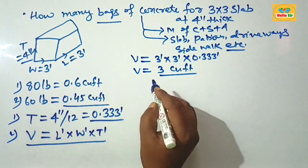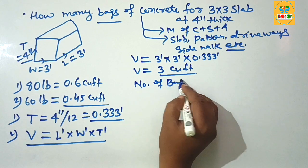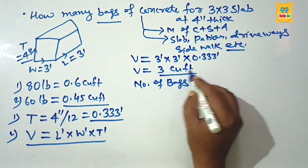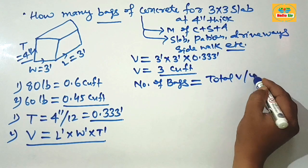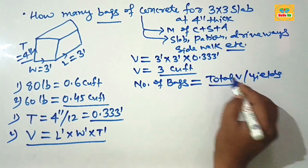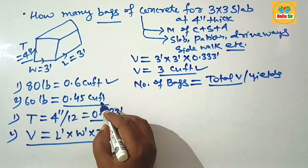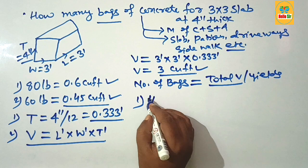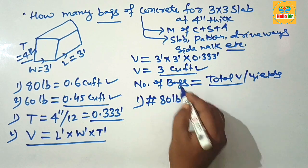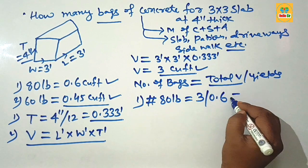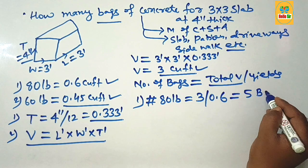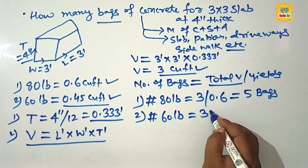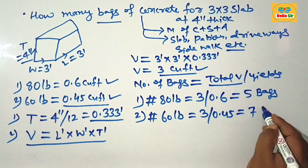To calculate the number of bags, the formula is to divide the total volume by the yield per bag. Total volume is 3 cubic feet. The yield of an 80-pound bag is 0.6 cubic feet, and the yield of a 60-pound bag is 0.45 cubic feet. For 80-pound bags: 3 divided by 0.6 equals 5 bags. For 60-pound bags: 3 divided by 0.45 equals about 7 bags.